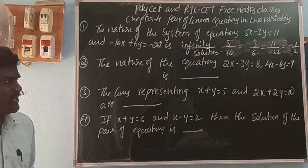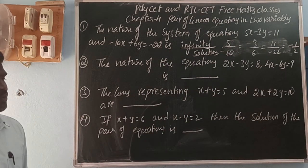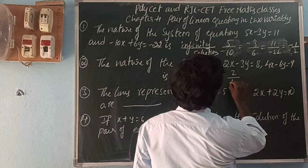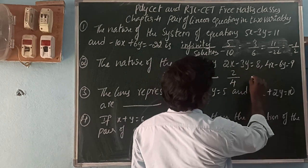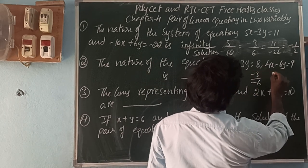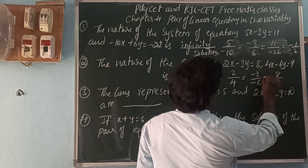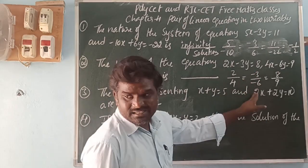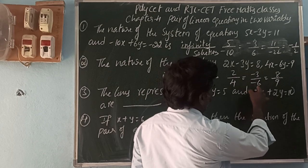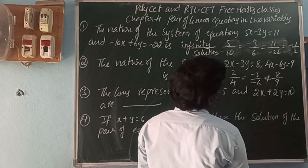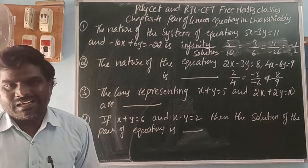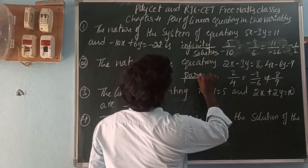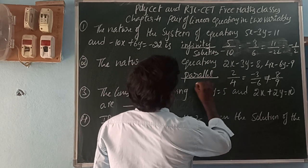Next, the nature of the equations: 2x minus 3y is equal to 8 and 4x minus 6y is equal to 9. Here the x coefficient ratio is 2 by 4, the y coefficient ratio is minus 3 by minus 6, and the constant ratio is 8 by 9. So 2 by 4 equals 1 by 2; minus 3 by minus 6 equals 1 by 2; but 8 by 9 is not equal. So these ratios are not all equal — the lines are parallel lines and the system has no solution.